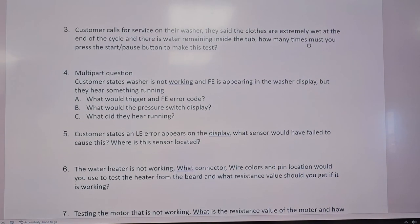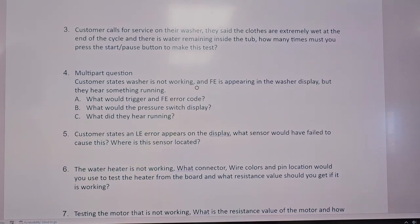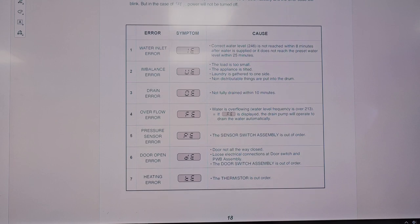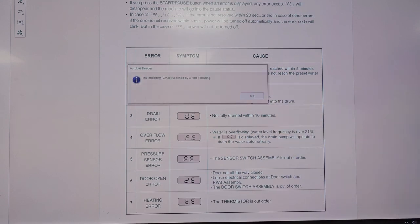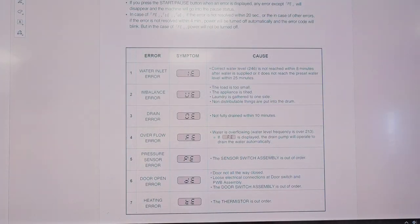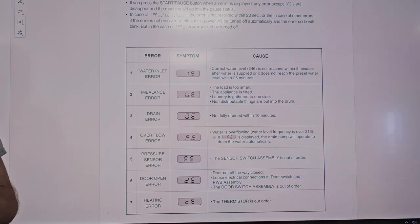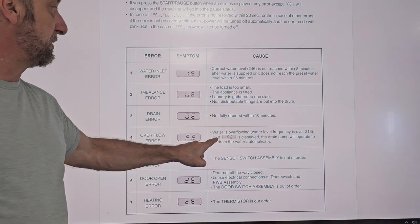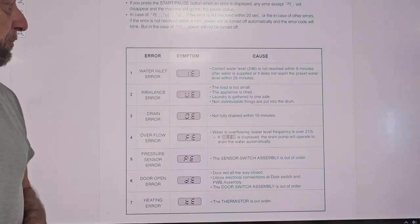Number four. There's a multi-part question. Customer states that the washer is not working and FE is appearing in the washer display. But they hear something running. So they see FE, but they hear something running. What would trigger the FE error codes? Let's go to the error codes. So we go here and FE is number flow. Number flow. I read the word flow. That's the overflow error. What does that mean? Overflow error. Water overflow? Well, that there's too much water and it's going in somewhere. But how does it trigger that error? Like does it trigger that from too much water? Well, water's overflowing. The water level frequency is over 213. Yeah. If that heat's displayed, the drain pump will operate the drain water automatically.